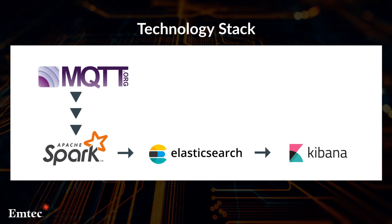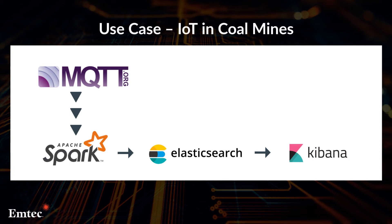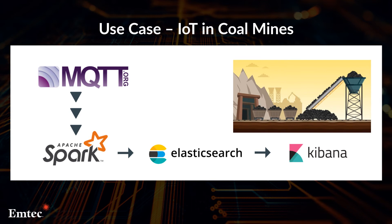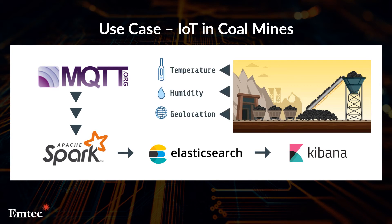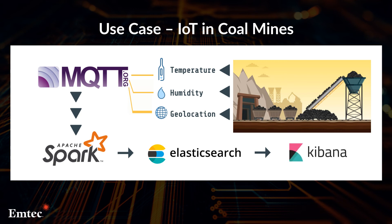Take the following use case of how these technologies can be used. In this example, a coal mine company has many mines located in different geolocation zones. The working conditions inside the mines must be monitored at all times for the safety of their workers. Values of different parameters such as temperature, humidity, and the geolocation of the mine can be transmitted every few seconds using MQTT protocol. This data then can be processed using Spark Streaming and then uploaded to Elastic Search. Kibana is then used for visualization.